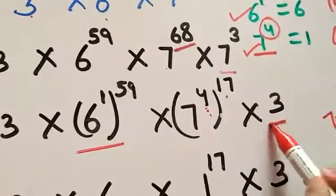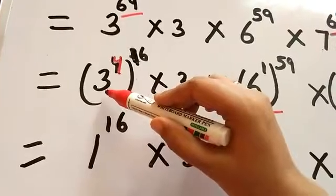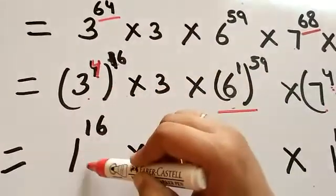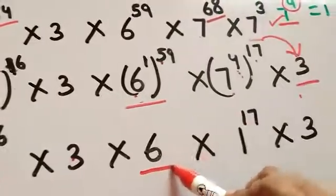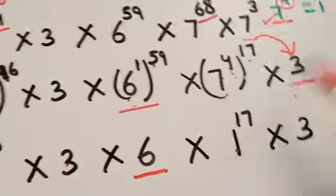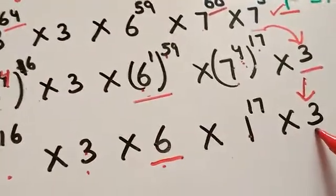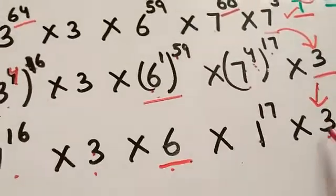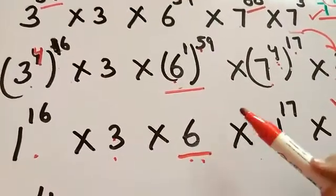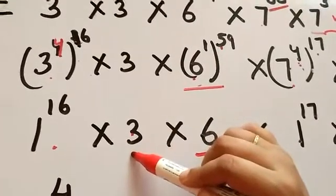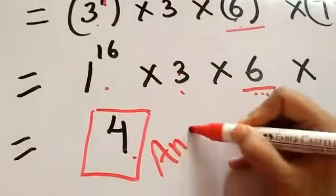Now replace using the cycles: 3 raised to power 4 is 1, so (3 raised to power 4) raised to 16 is 1. 6 raised to any power is 6. 7 raised to power 4 is 1, so (7 raised to power 4) raised to 17 is 1. You are left with 3 × 6 × 3. Multiply: 3 into 6 is 18 — unit digit 8. Then 8 into 3 is 24 — unit digit 4. So finally the unit digit is 4. This is your answer.